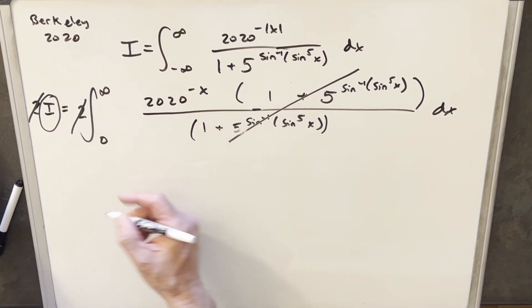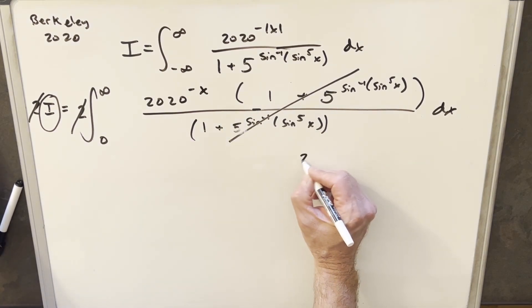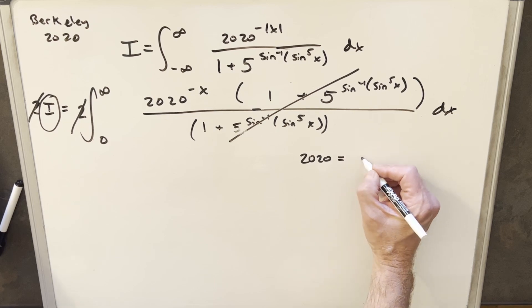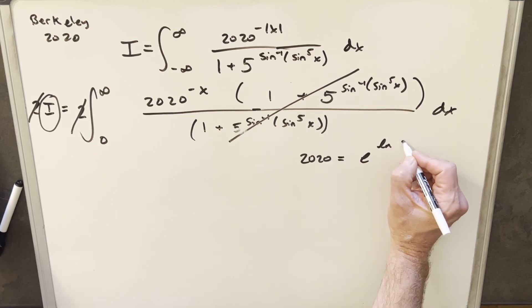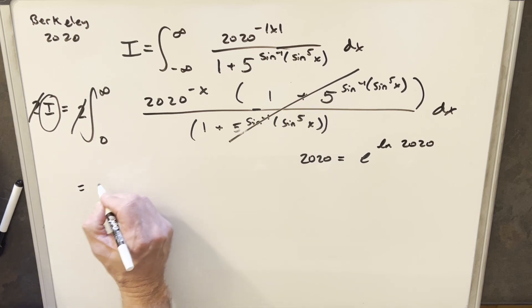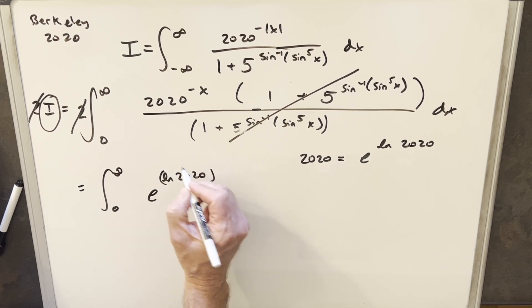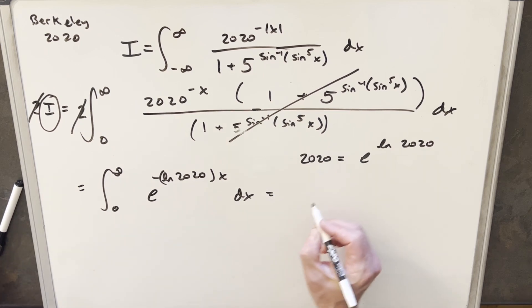Now, to integrate this, this is not too bad, because what I can do is I can take my 2020. We'll use the trick that we can use whenever we have a constant in the base. We can write 2020 as e to the ln of 2020. So we're going to have e ln 2020. I'll take this minus sign out front. And then here's our x. And then in this form, we can just integrate it.